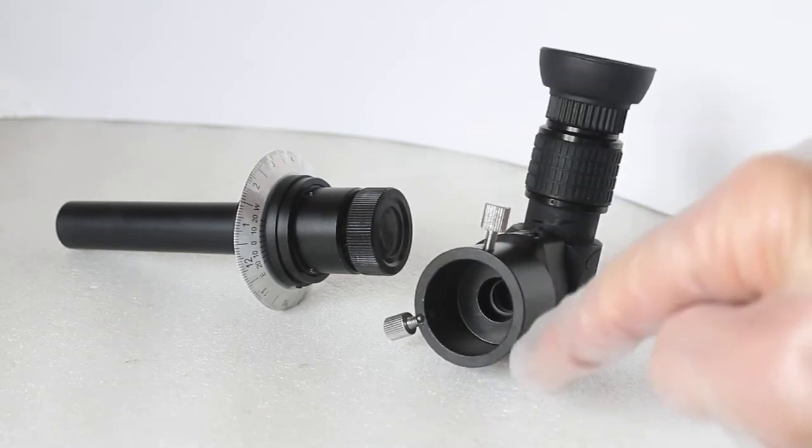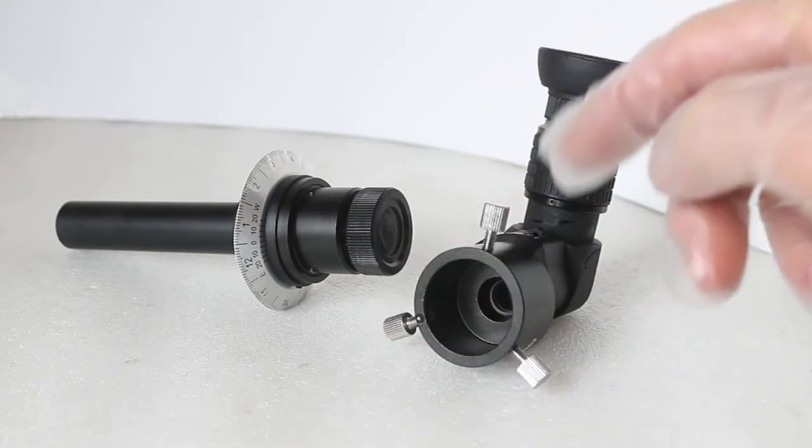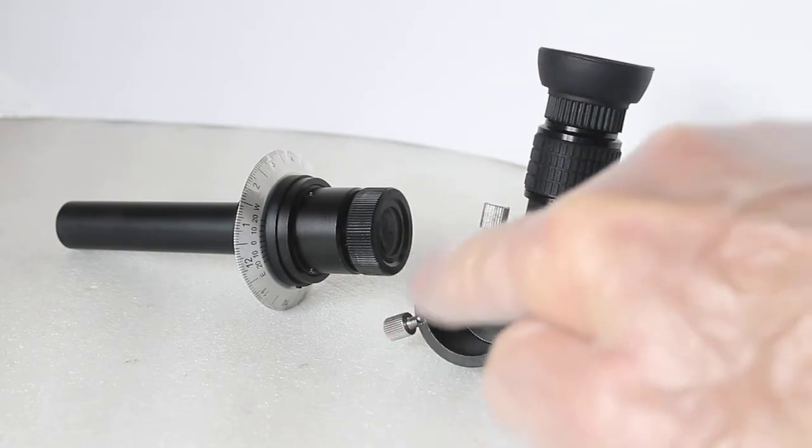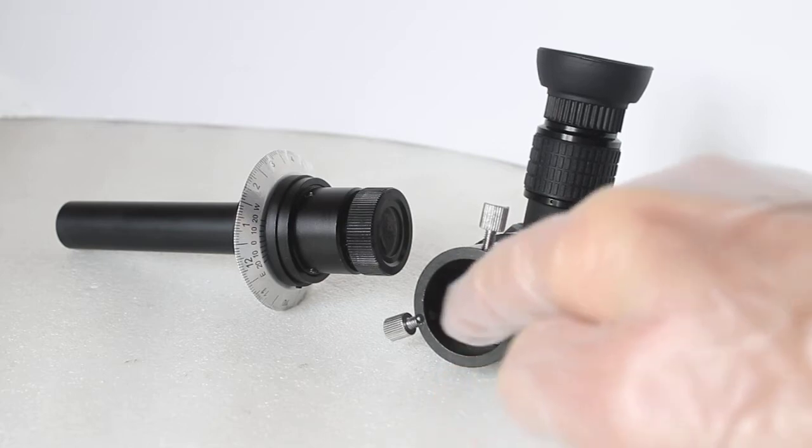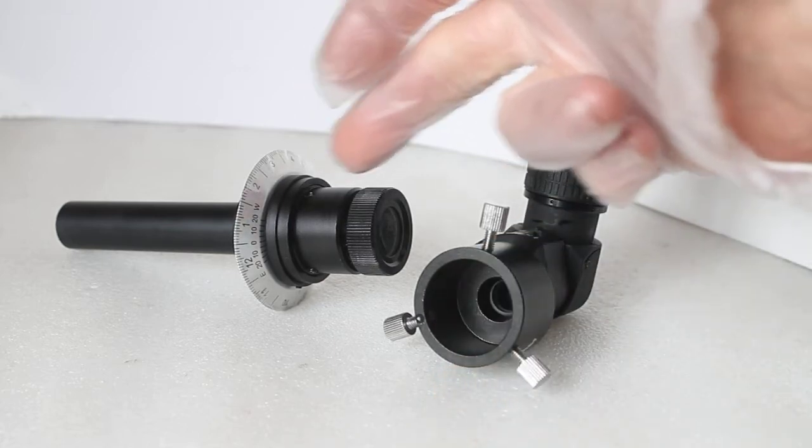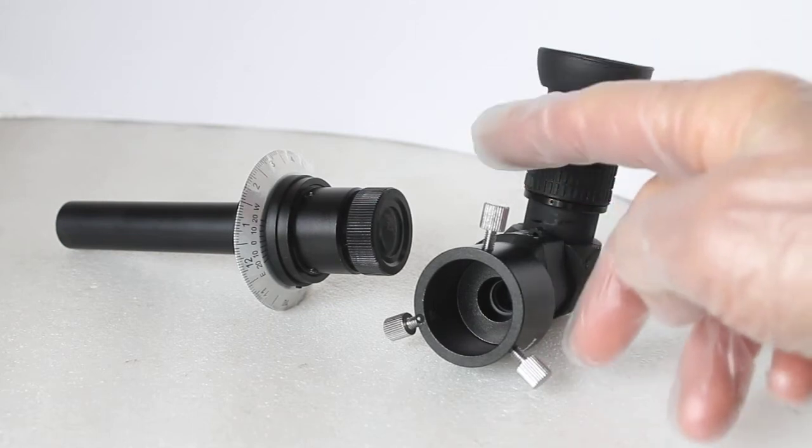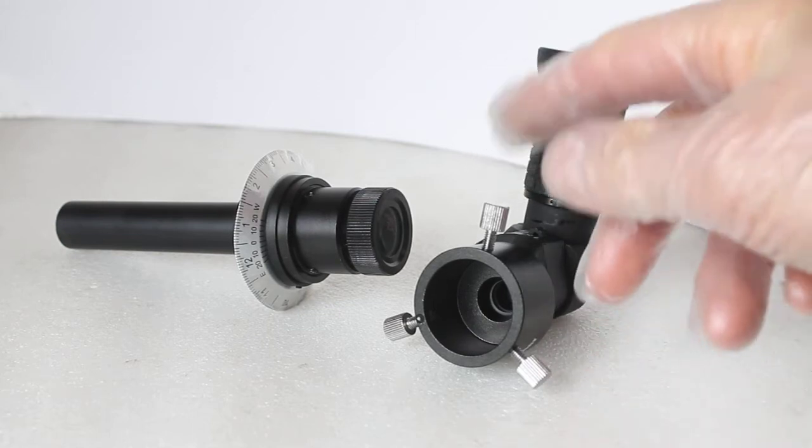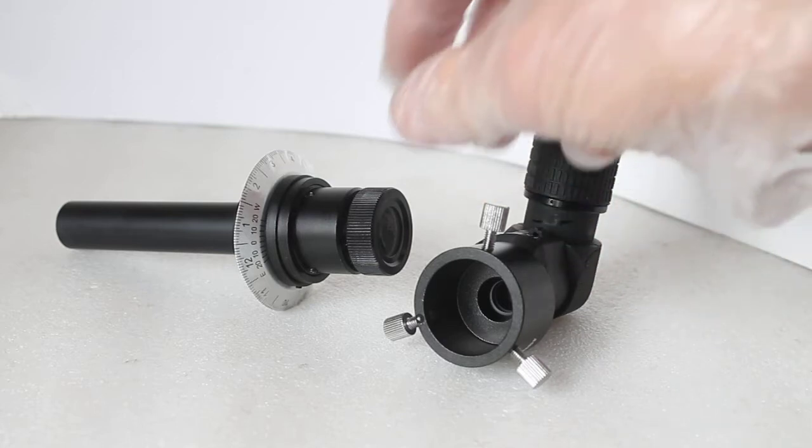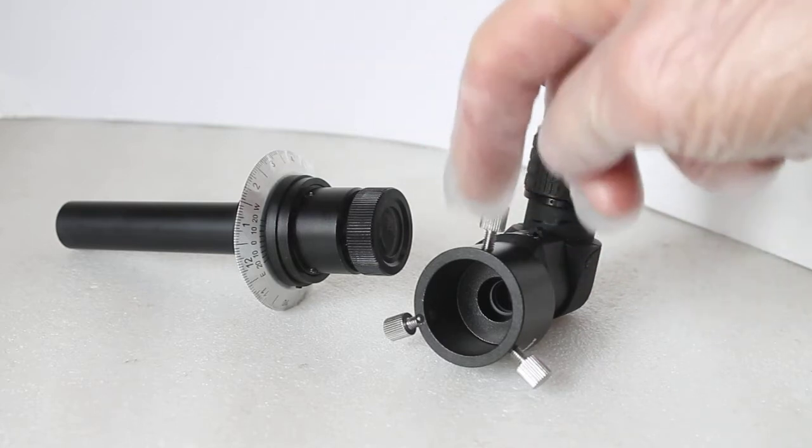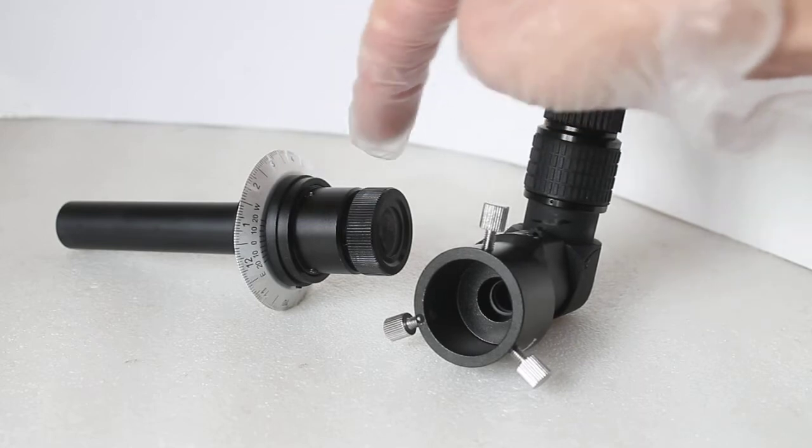When you take it out the box, these three screws here will be screwed in a bit more, but what I've already done is I've unscrewed them so they're nice and flush on the inside so we can now place it over the Polar Scope. Be careful when you take these out because if you pull them out a little bit too far they struggle to connect with the thread when you put it back on again.